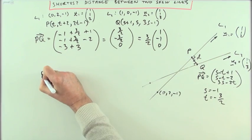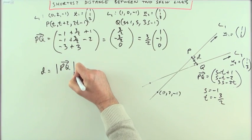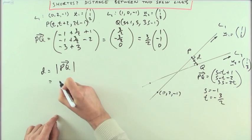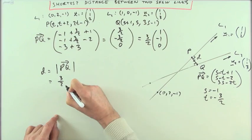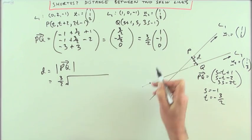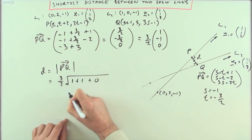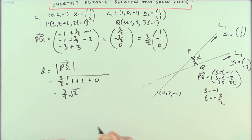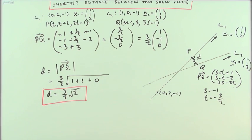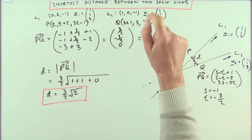The distance is the length of that vector. The length is (3/2) times the length of (1, -1, 0), which is (3/2) times √(1 + 1 + 0) = (3/2)√2, or equivalently 3/√2. So the shortest distance between the two lines is (3/2)√2 units. If you wanted the actual points of closest approach, simply substitute S = -1 and T = -3/2 into the expressions for P and Q.